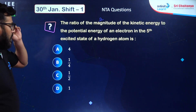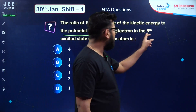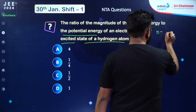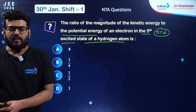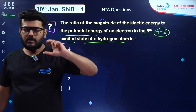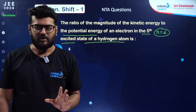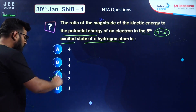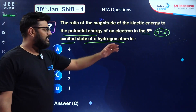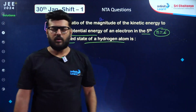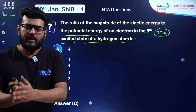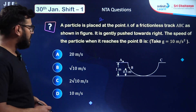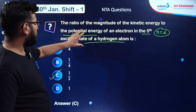The ratio of magnitude of kinetic energy to potential energy of an electron in the fifth excited state of hydrogen atom. The fifth excited state means n equals 6. You should know that the kinetic energy value is always half the magnitude of potential energy, and this does not depend on whichever state you are in. In every orbit, KE is always half the magnitude of PE. So the answer is 1:2.